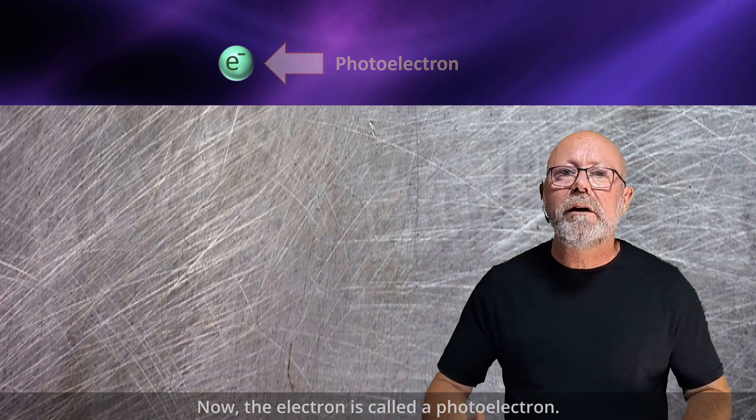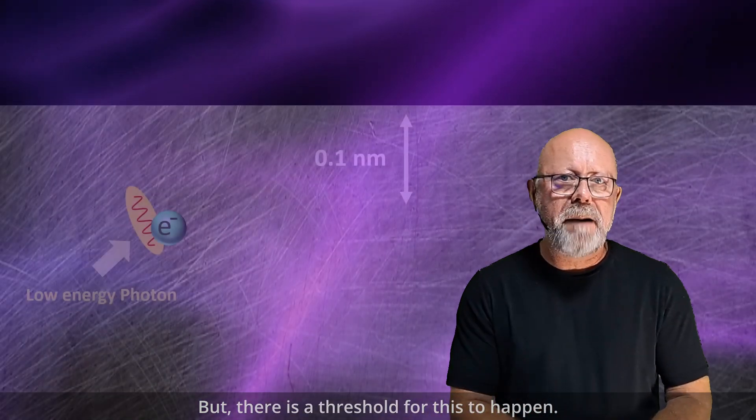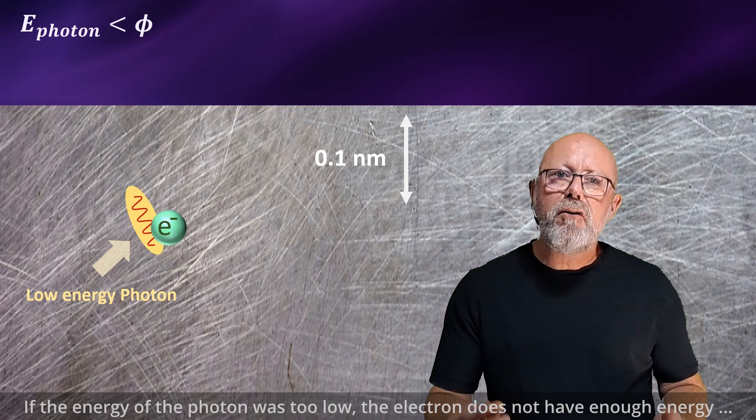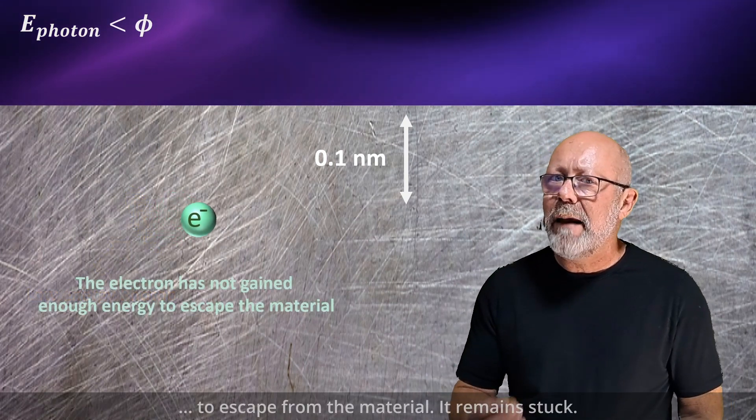Now, the electron is called a photoelectron. But there is a threshold for this to happen. If the energy of the photon is too low, the electron does not have enough energy to escape from the material.